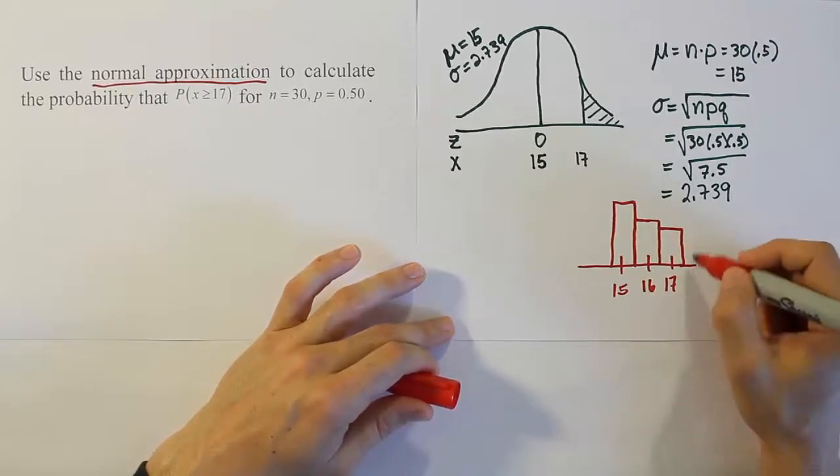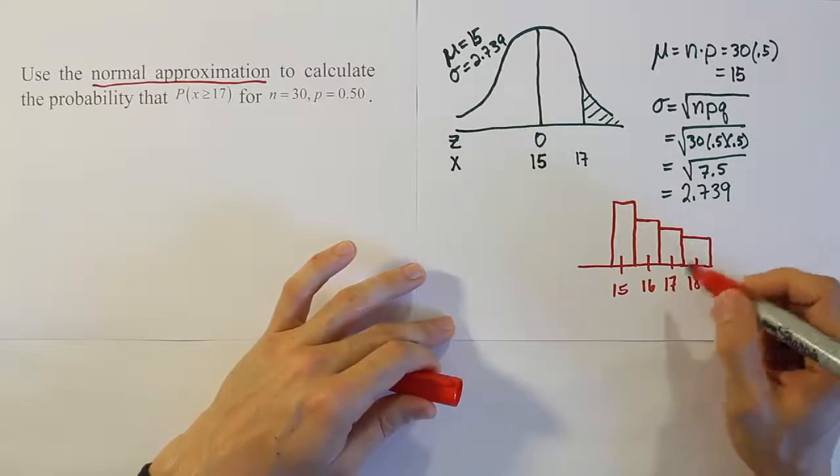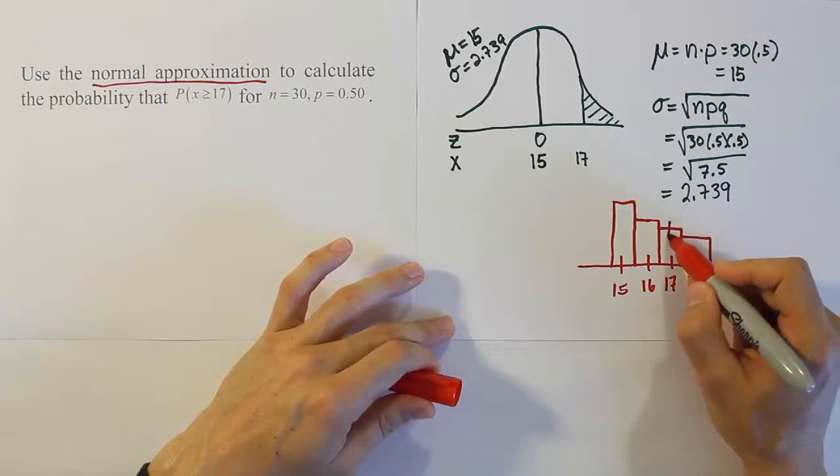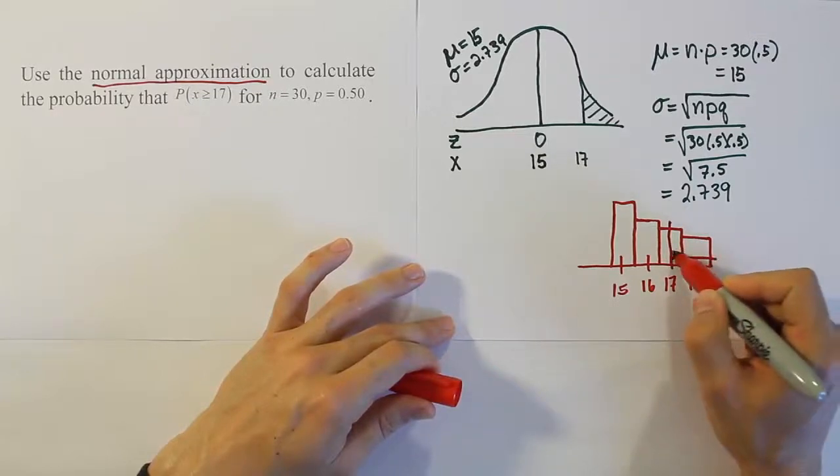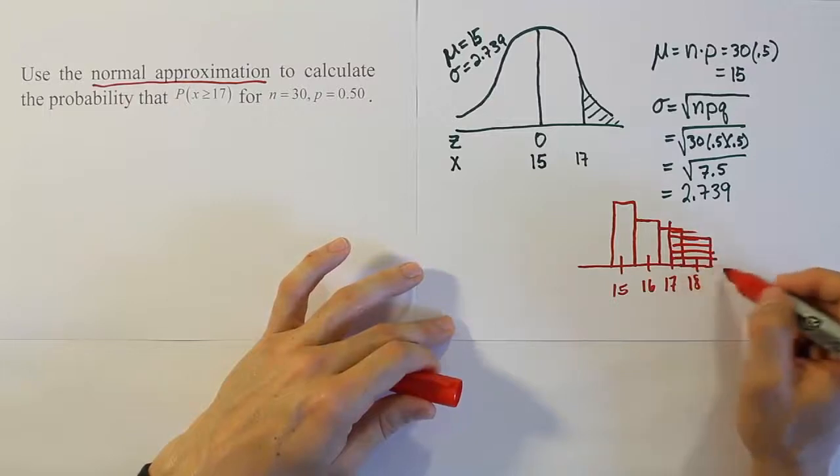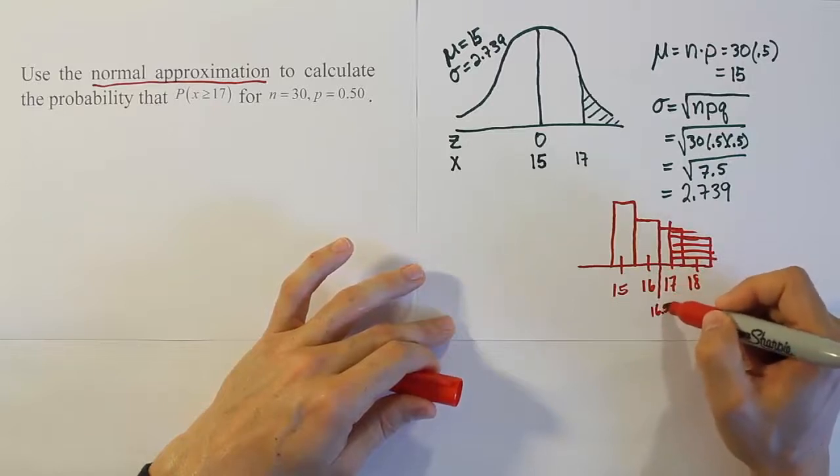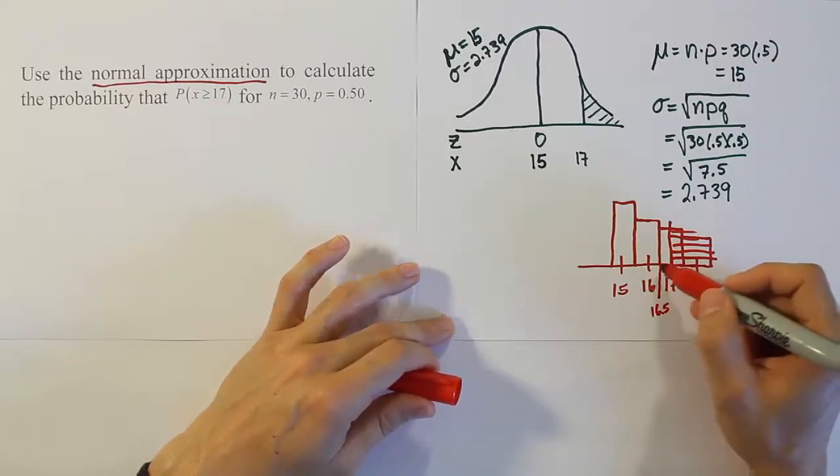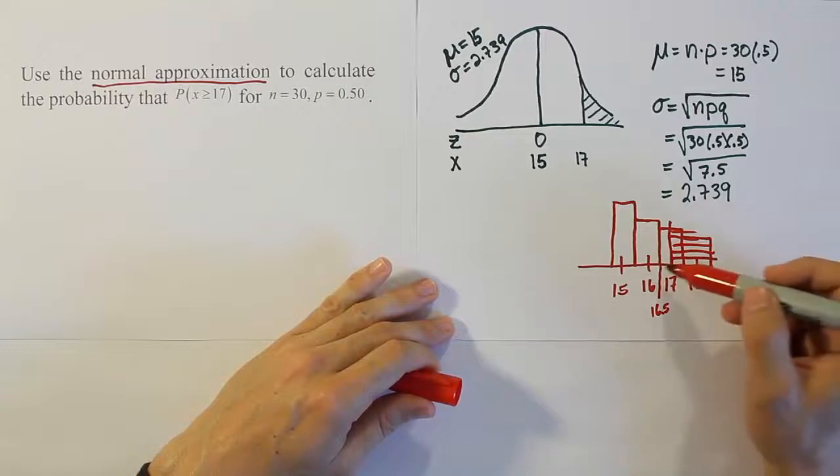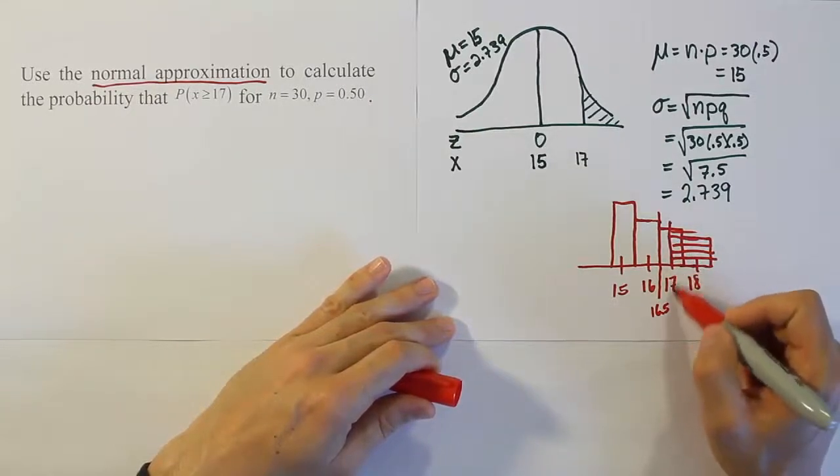Well, if we were to start to go, say we're going to get all the area from 17 and above. If we start right at 17 and go up to find all this area, we're actually chopping half of the rectangle for 17 off because we know this actually goes down to 16.5, the number smack in the middle between 16 and 17. That's how the rectangles are when you're dealing with a discrete random variable. So basically what we have to do is not start right at 17. We actually have to start a little before.